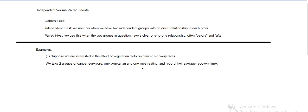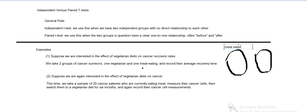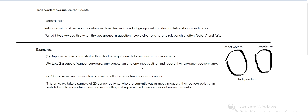So for an example, if we're testing the effect of vegetarian diets on cancer recovery rates, and we take two groups — one vegetarian and one meat-eating — and record their average recovery time. Those are two completely separate groups with no clear one-to-one pairing, so those are independent. We'd be doing an independent t-test there.